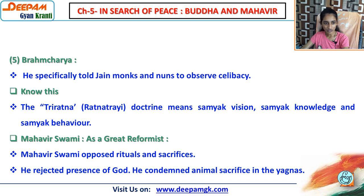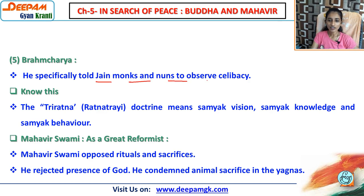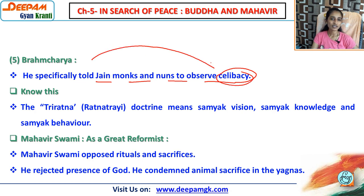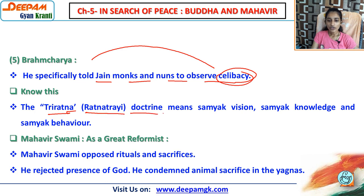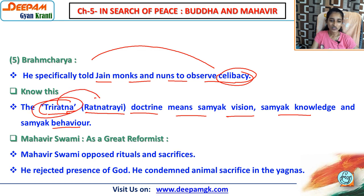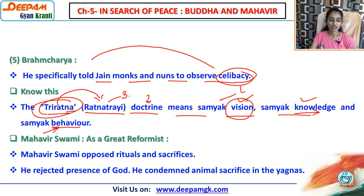The fifth vow is Brahmacharya. He specially told Jain monks and nuns to observe brahmacharya — once you leave home you have to live the life of a saint. The three Ratnas (Ratna Trai) doctrine consists of Samyak Vision (right vision), Samyak Knowledge (right knowledge), and Samyak Behavior (right conduct). These are included in the Ratna Trai.